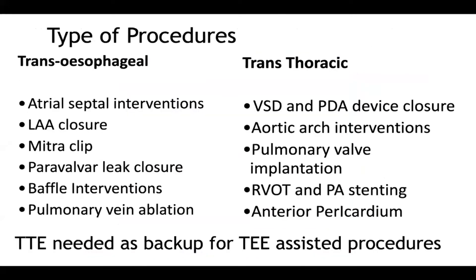For the same reason, there is a difference in the type of procedures where each modality is preferred. Trans esophageal echo is preferred for interventions involving the posterior structures: inter-atrial septal interventions, left atrial appendage closure, MitraClip, paravalvular closure, baffle interventions, and even pulmonary vein ablation in electrophysiology. All these procedures favour trans esophageal echo because they involve the posterior structures of the heart.